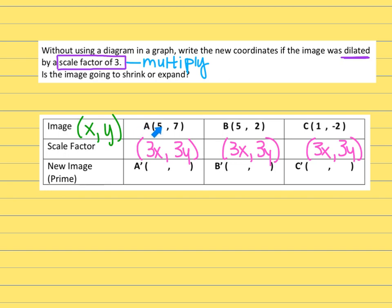For the new image: point A used to be (5, 7), so multiplying both by 3 gives (15, 21). Point B gives x = 15 and y = 6. For point C: 3 times 1 is 3, and 3 times −2 is −6, so C′ is (3, −6). Make sure you keep that negative sign, otherwise the point will go somewhere else on the graph.